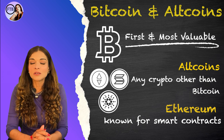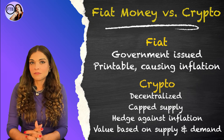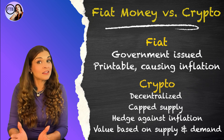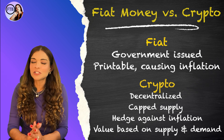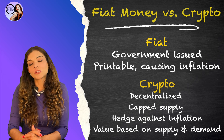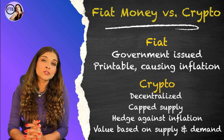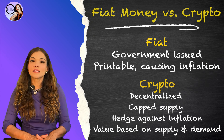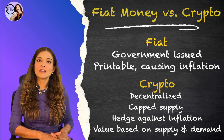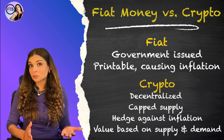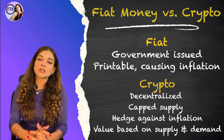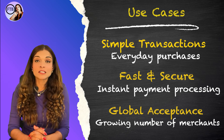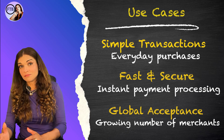Let's compare fiat money, like the US dollar, to crypto. Fiat money is issued by the government and can be printed, which can lead to inflation. Crypto, on the other hand, is decentralized and its supply is usually capped. Bitcoin, for example, has a 21 million coin limit, which makes crypto a hedge against inflation — unlike fiat, which can be devalued by overprinting.